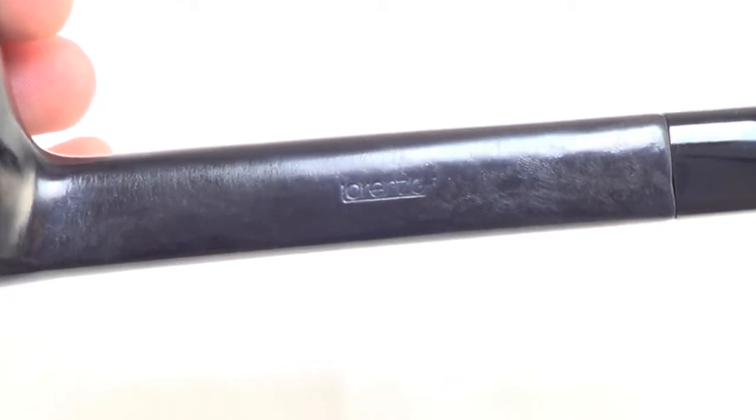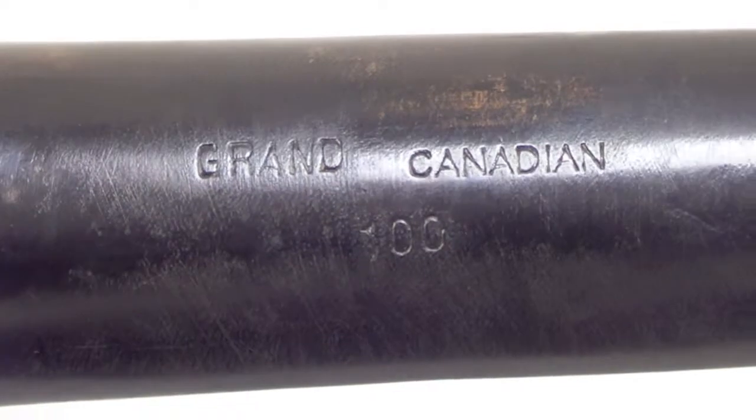The pipe is marked Lorenzo Grand Canadian 100, Italy 8695. Lorenzo stamp on the stem also.